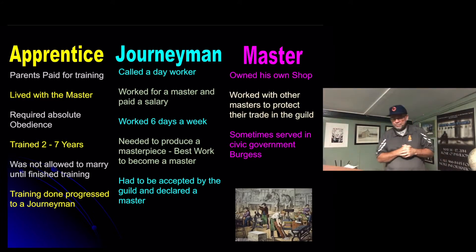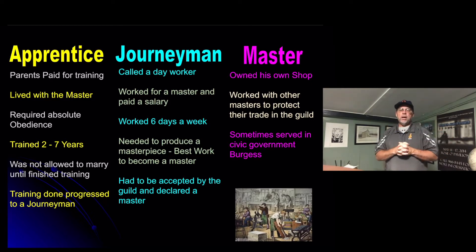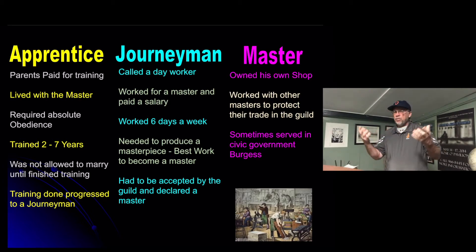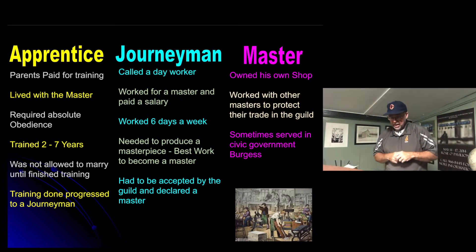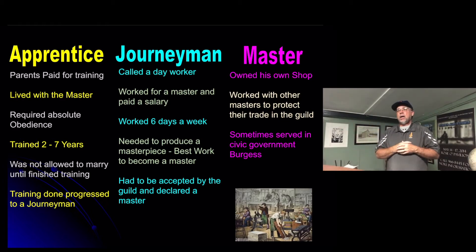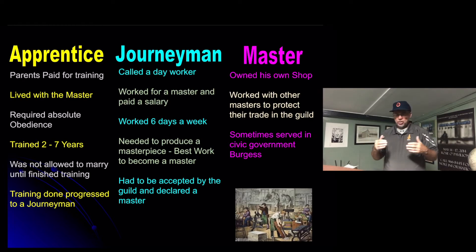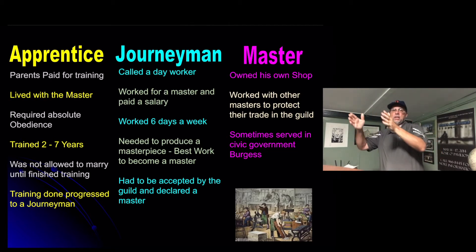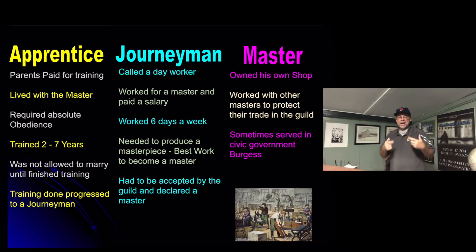A master owned his own shop and worked with other masters to protect the trade in the guild. Masters were the leaders with voting power within the guild to determine action, while journeymen had a voice in more peripheral matters. Being a master within a guild was often a stepping stone into civic government — to become a chancellor, mayor, sheriff, or bailiff of the community. This apprentice-journeyman-master process was very effective in making sure someone actually knew their trade and knew it well.